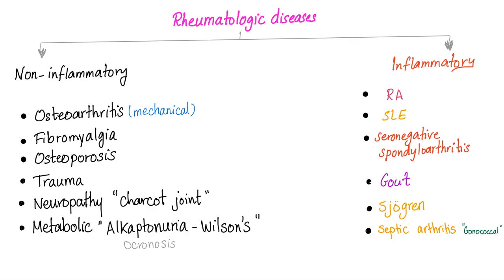We divide rheumatological disease into non-inflammatory and inflammatory. Osteoarthritis is non-inflammatory — and that doesn't mean the knee can't be inflamed locally. What I'm saying is there is no systemic inflammation in osteo. That's why ESR and CRP are usually normal. But in rheumatoid arthritis, of course, it's a systemic, stinking inflammation.